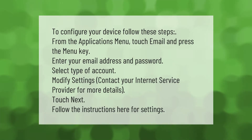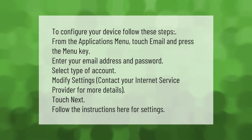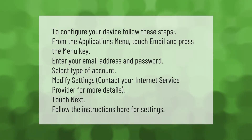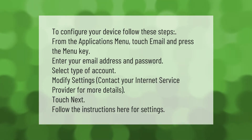To configure your device, follow these steps: from the Applications menu, touch Email and press the Menu key. Enter your email address and password. Select the type of account and modify settings. Contact your internet service provider for more details. Touch Next and follow the instructions for settings.